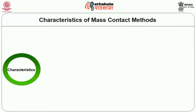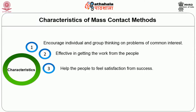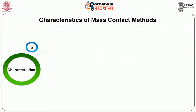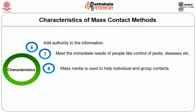The characteristics of mass contact methods include: they encourage individual and group thinking on problems of common interest; they are effective in getting work from the people; mass contact helps people feel satisfaction from success; they promote understanding and create goodwill towards extension work; they influence people to adopt new methods; they add authority to information; and they meet the immediate needs of people like control of pest and disease.